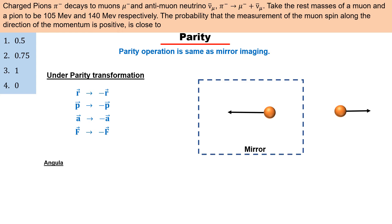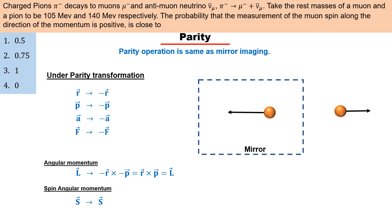जैसे angular momentum। चूँकि parity transformation में linear momentum और displacement दोनों के sign change हो जाते हैं, इसलिए angular momentum invariant बना रहता है। इसी तरह spin की भी parity invariant है।